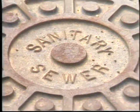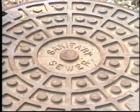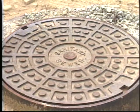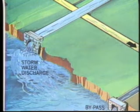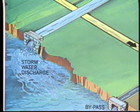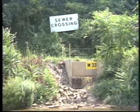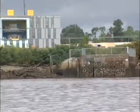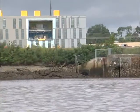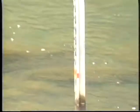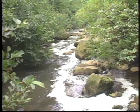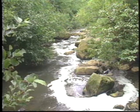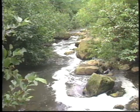Storm runoff from streets, land, and rooftops is collected separately in a storm sewer. In some cases, a combined sewer is used to collect and move both sanitary wastes and storm runoff. However, during a storm, a plant receiving flow from a combined sewer may be forced to bypass a portion, allowing untreated waste to be discharged into receiving waters.